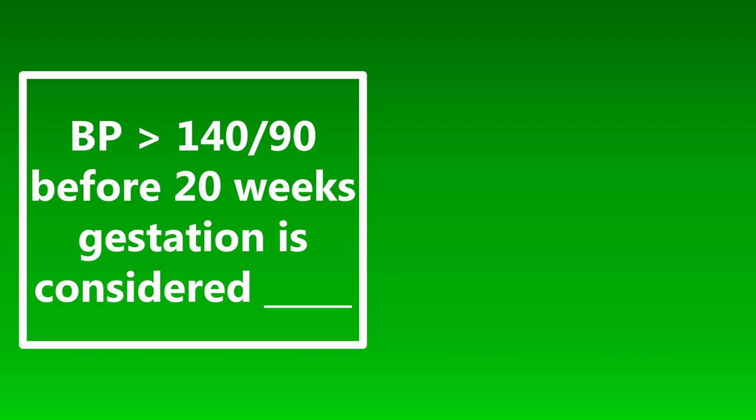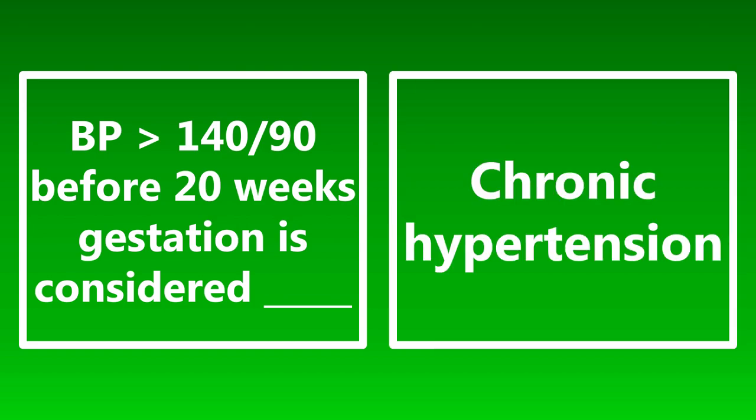Blood pressure greater than 140 over 90 before 20 weeks gestation is considered what? Remember, timing in pregnancy is the differentiating factor for a lot of things. If a female patient has hypertension occurring before 20 weeks gestation, this is considered chronic hypertension.